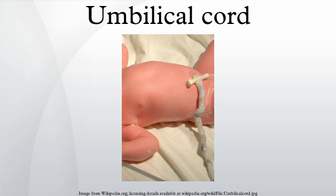Connection to fetal circulatory system: the umbilical cord enters the fetus via the abdomen at the point which will become the umbilicus. Within the fetus, the umbilical vein continues towards the transverse fissure of the liver, where it splits into two. One branch joins with the hepatic portal vein, which carries blood into the liver. The second branch bypasses the liver and flows into the inferior vena cava, which carries blood towards the heart. The two umbilical arteries branch from the internal iliac arteries and pass on either side of the urinary bladder into the umbilical cord, completing the circuit back to the placenta.